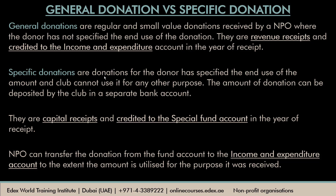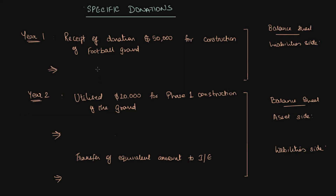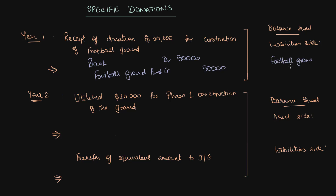Specific donations are capital receipts in nature and are not credited to the income and expenditure account in the year of receipt. When the club actually utilizes these funds for the specified purpose, it can transfer the relevant amounts to the income and expenditure account in those years. For example, in year one the club received a specific donation of $50,000 donated for the construction of a football ground. The journal entry: bank is debited by $50,000 and a football ground fund account is opened and credited by $50,000. In the balance sheet liability side, the football ground fund is shown at $50,000 since nothing has yet been spent.